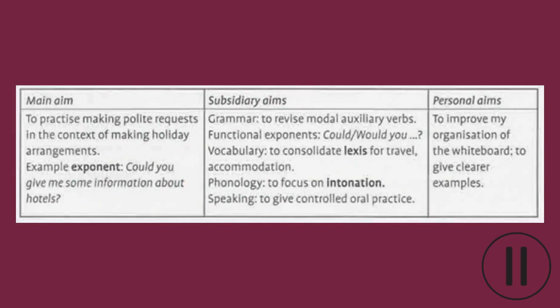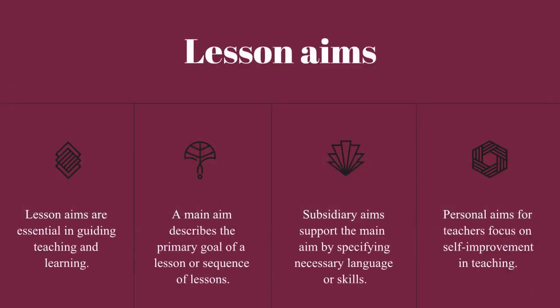Look at the table. Can you notice the difference between main aims, subsidiary aims, and personal aims? Pause the video to notice the differences. Lesson aims are essential in guiding teaching and learning. A main aim describes the primary goal of a lesson or sequence of lessons. Subsidiary aims support the main aim by specifying necessary language or skills. Personal aims for teachers focus on self-improvement in teaching.